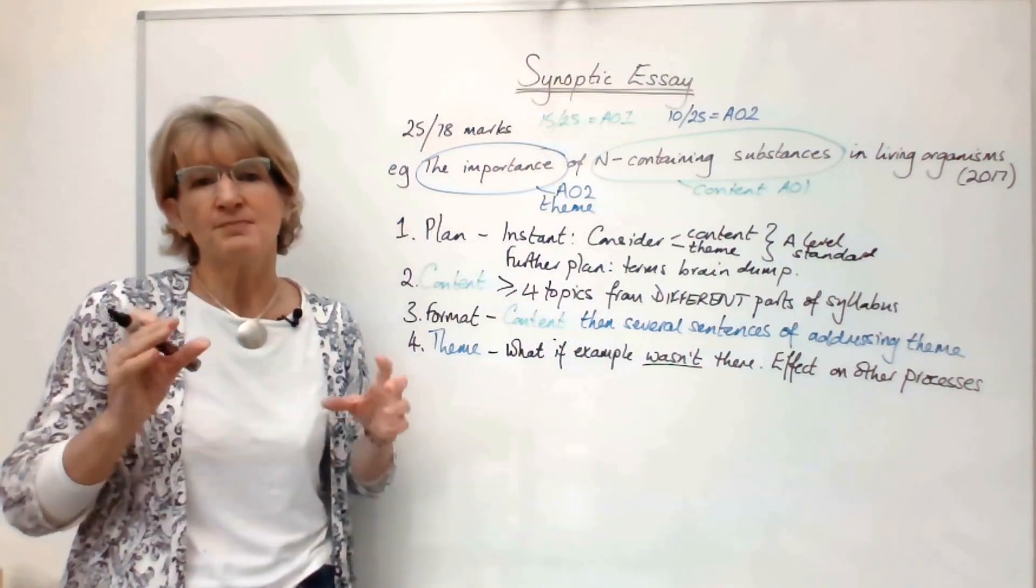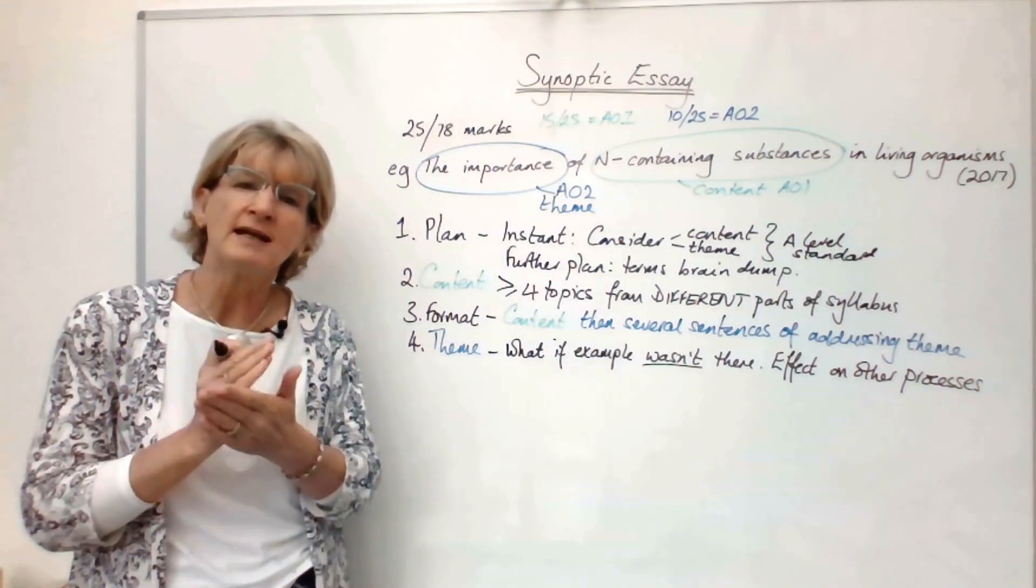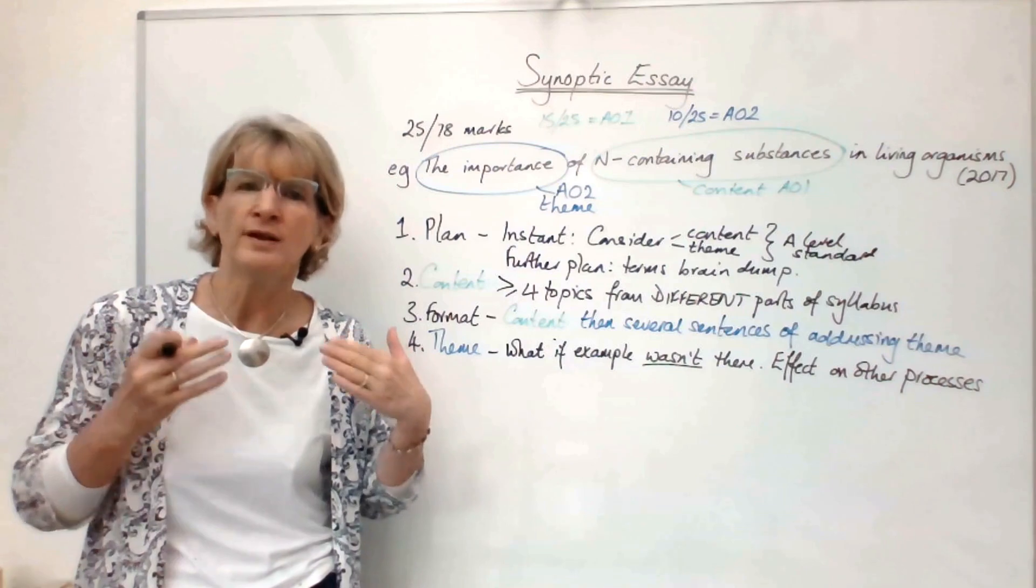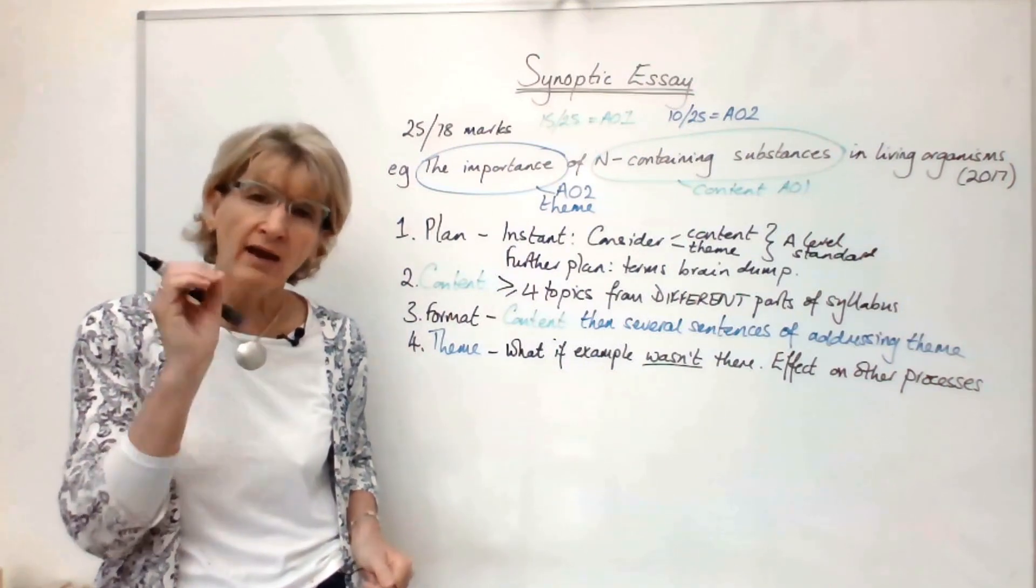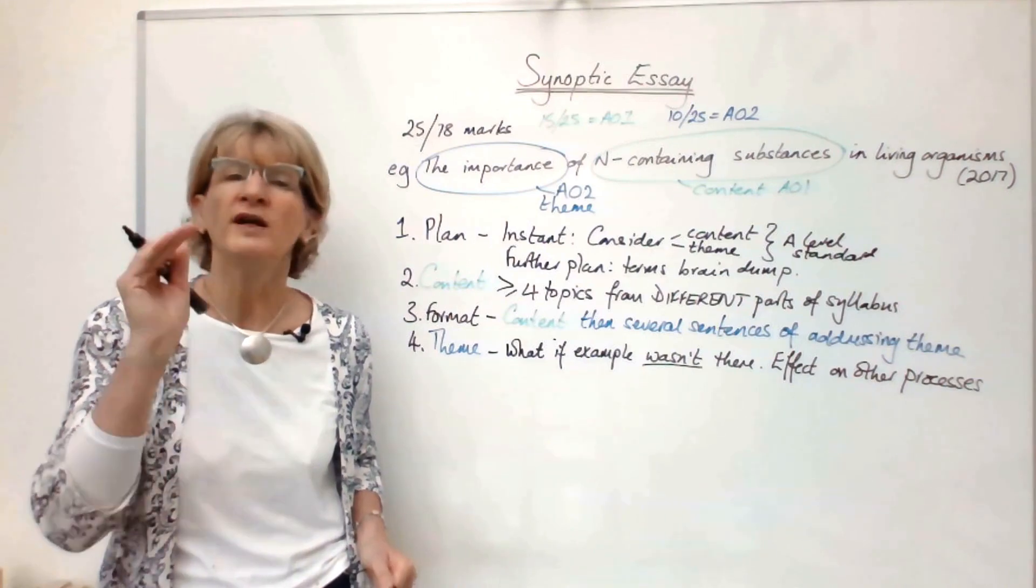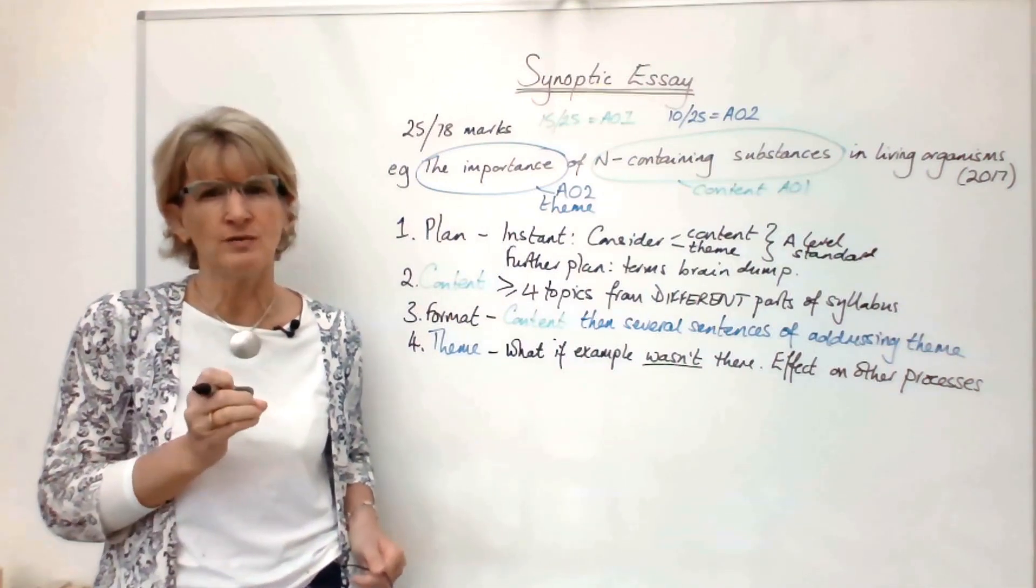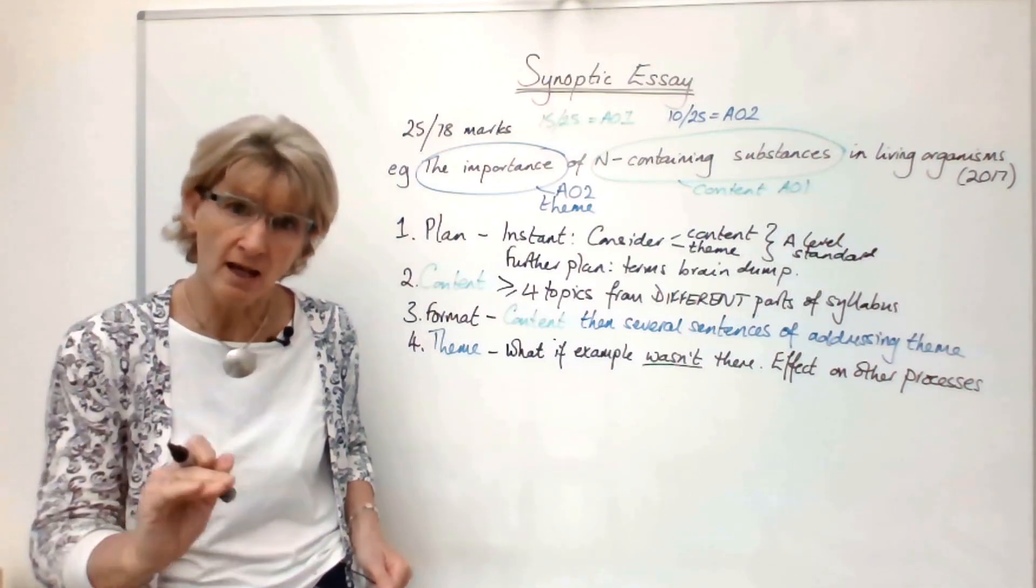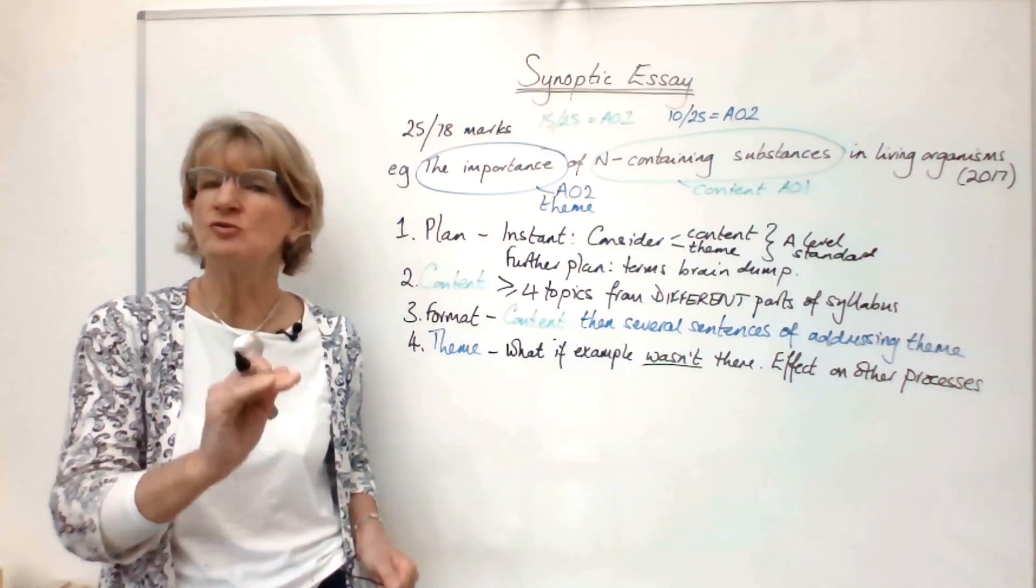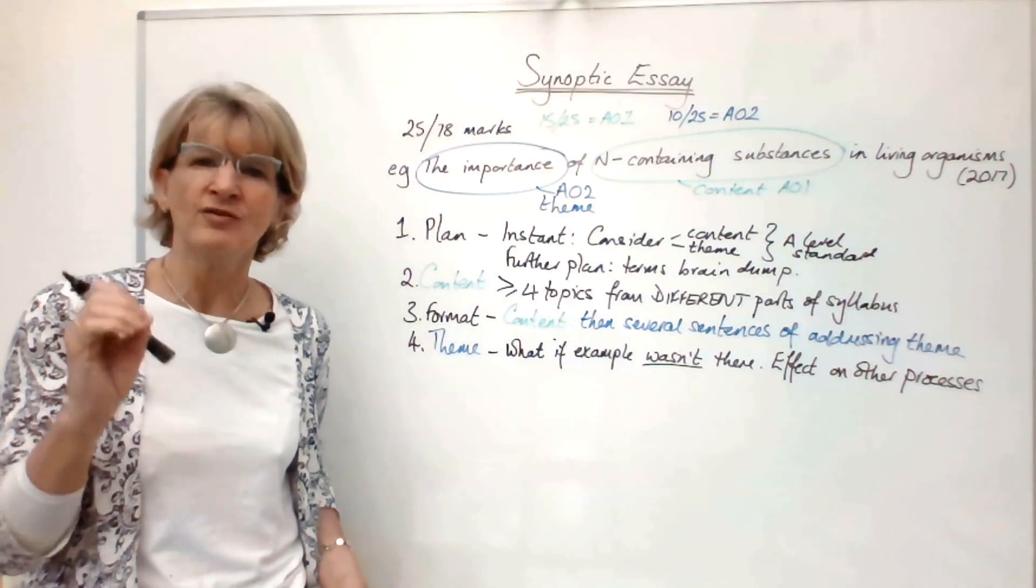Which leads me to tip number five, which is to make every sentence contain either new A-level detail or another piece of A-level terminology. Nearly every sentence should do that. If you are writing more than two sentences in a row where you are not using A-level terminology or things that you have learned in the last two years, you're probably starting to sink below A-level standard of knowledge. You don't want to be talking about GCSE standards or talking in generalizations. Think about including the stuff that you have learned in the last two years.